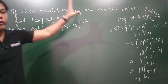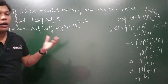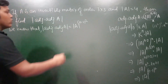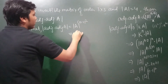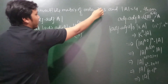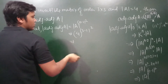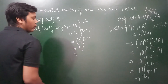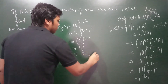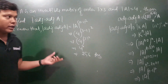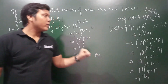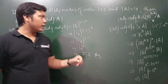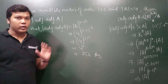Now इस question पर आते हैं। हमें property को proof नहीं करना, directly use करना है। हालांकि अगर आप properties भूल जाते हैं तो parent property से derive कर सकते हैं। अगर आप properties भूल जाते हैं तो derive कर सकते हैं using some parent property। So यह इस question का required solution है — please इसे अपनी notebook में note down कर लीजिए।